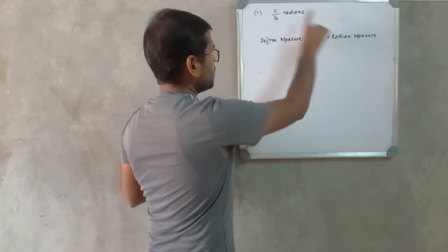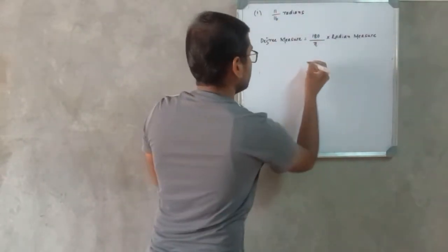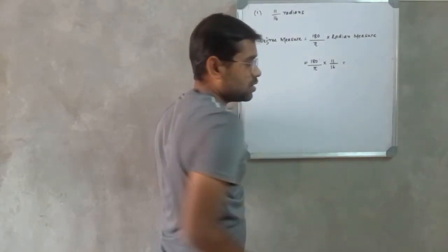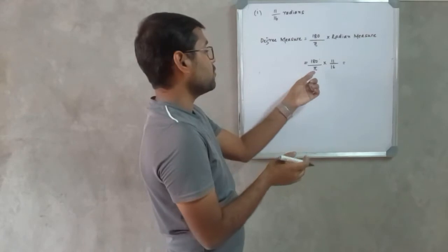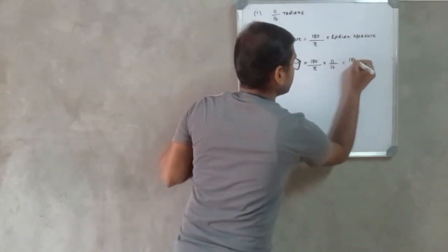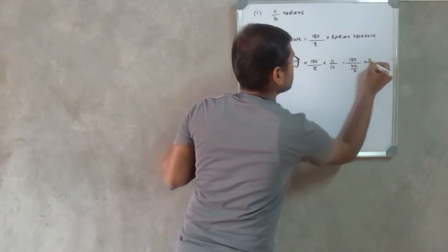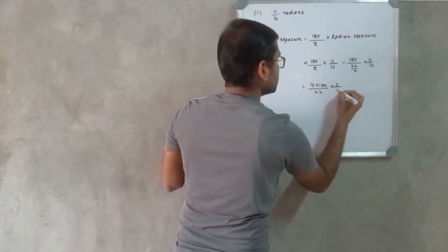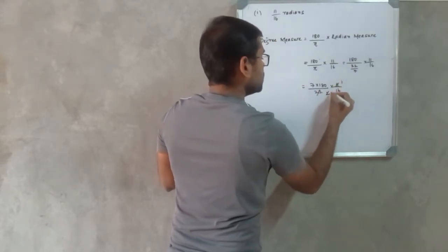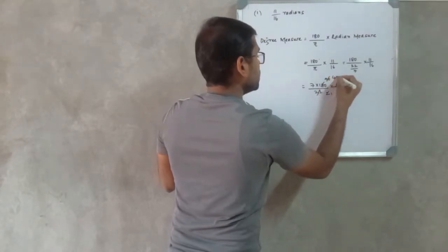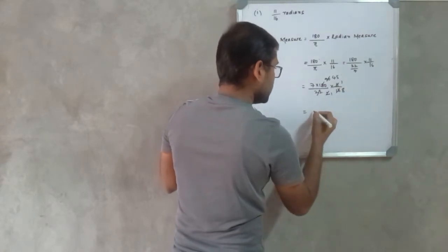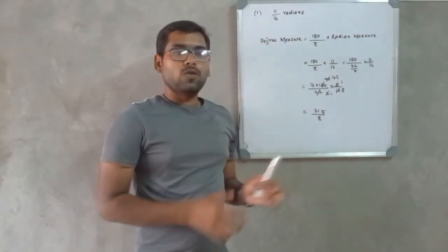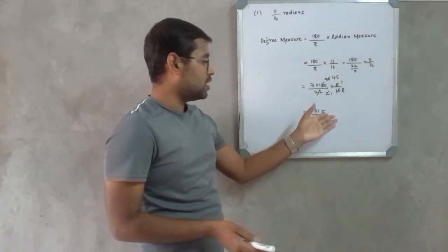So, degree measure = (180/π) × radian measure, which is 11/16. In the question, they have also told us that we can use the value 22/7 in place of π. Replacing π with 22/7, we will get 180 ÷ (22/7) × 11/16, which equals 7 × 180 ÷ 22 × 11/16. Simplifying, we get 315/8.